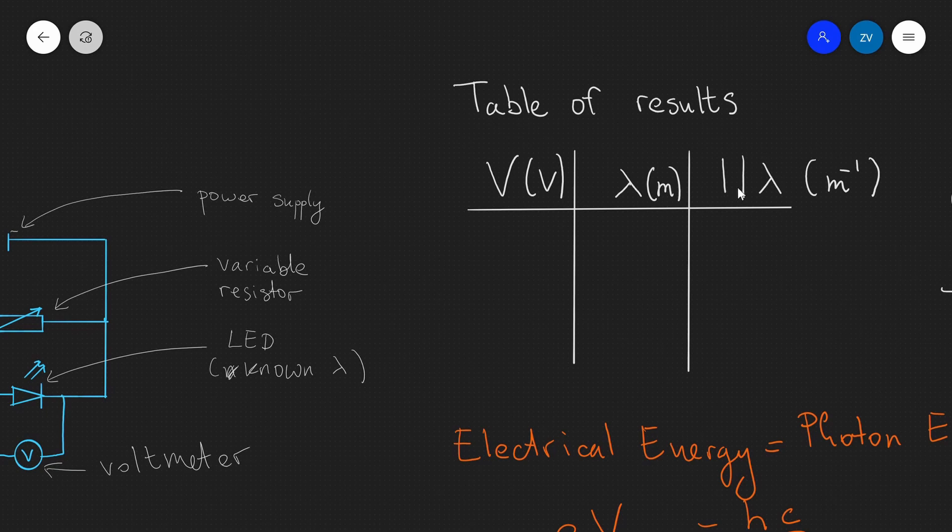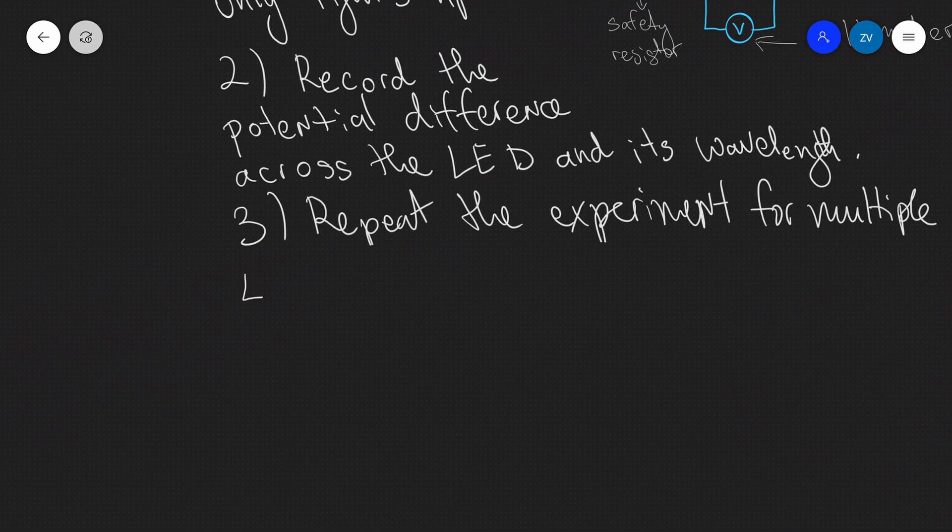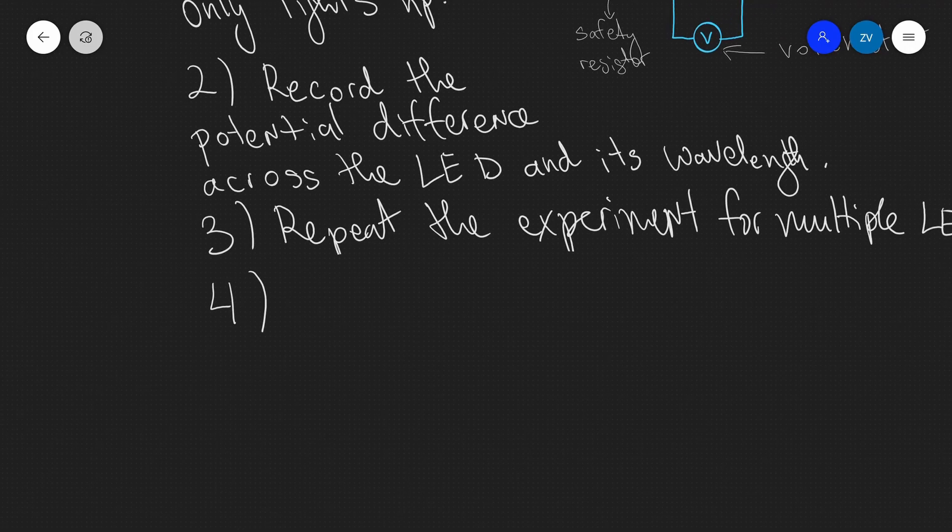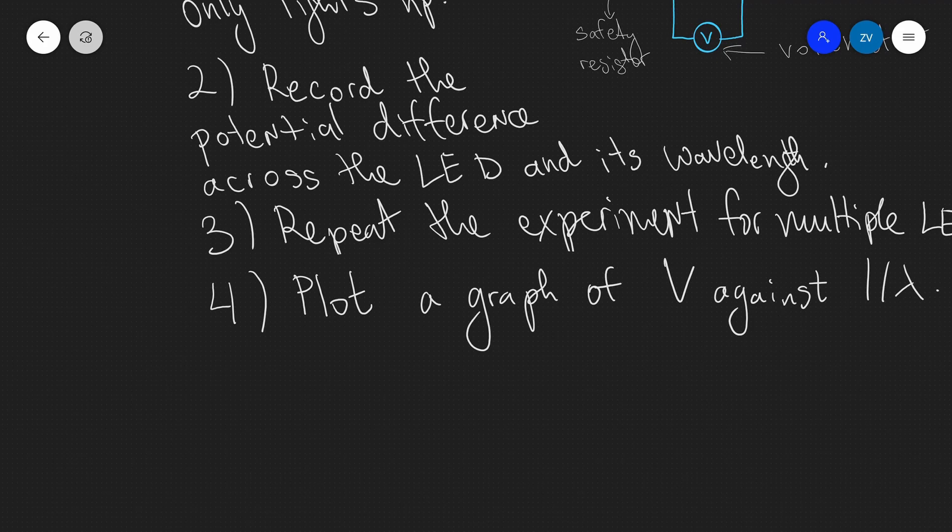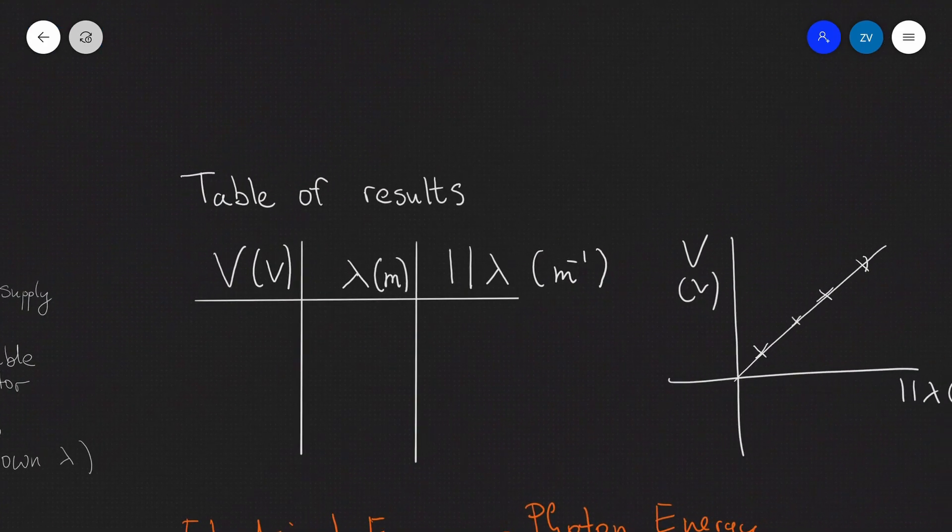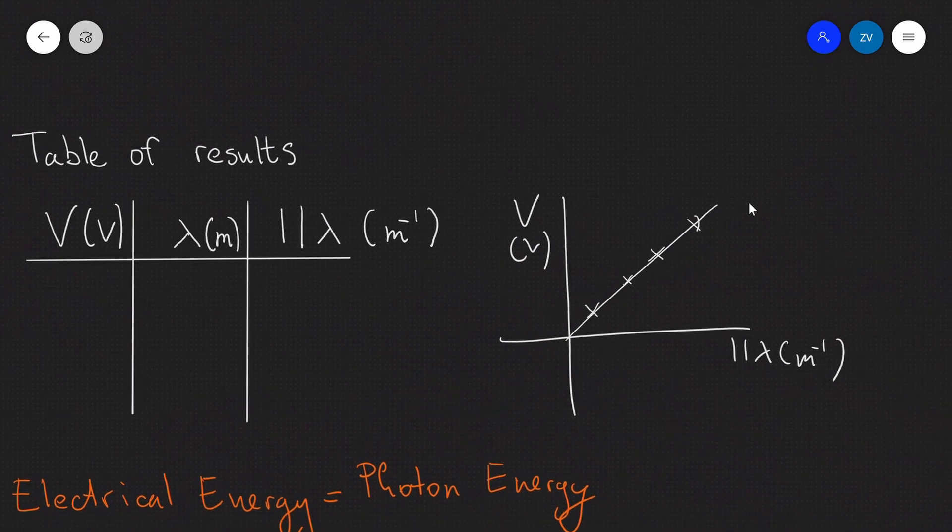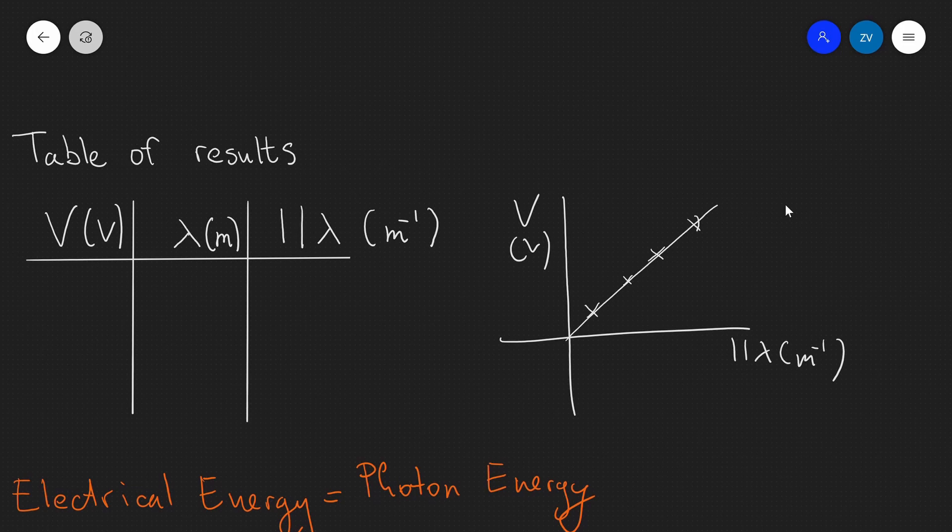Now, it'll also be incredibly useful to actually have in our table of results 1 over the wavelength. The reason for that is because our final step 4, so let me just write that down, will be to plot a graph of the potential difference v against 1 over lambda. In practice, our graph will look something like this. It will hopefully be a straight line and it will probably be going through quite close to the actual origin. Now, why have we plotted a graph of v against 1 over lambda? Let's have a look.